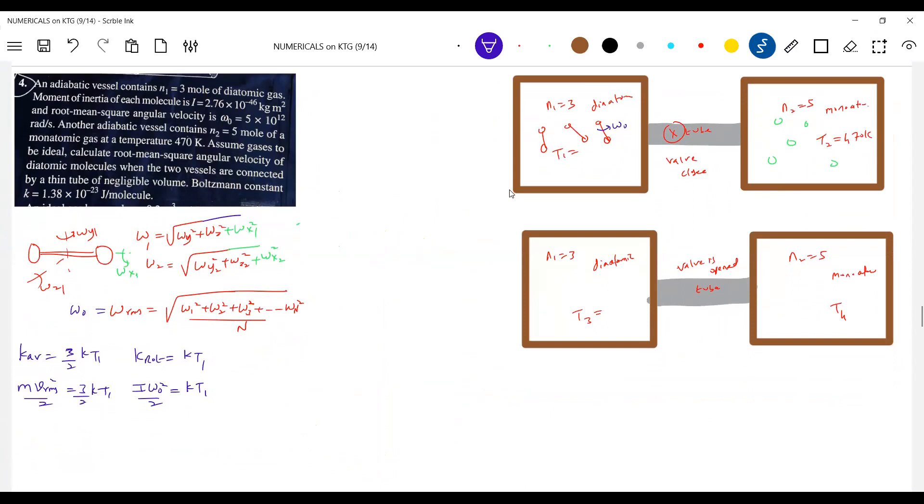Can we apply conservation of energy? Total energy of system should remain same. So Ui should be equal to Uf. This is the initial, this is the final. N1 f1 R T1 by 2. Final temperature has to be same. Why should final temperature be same?